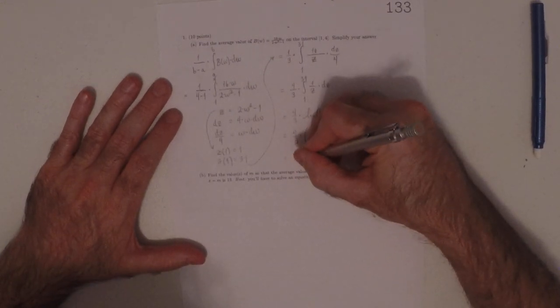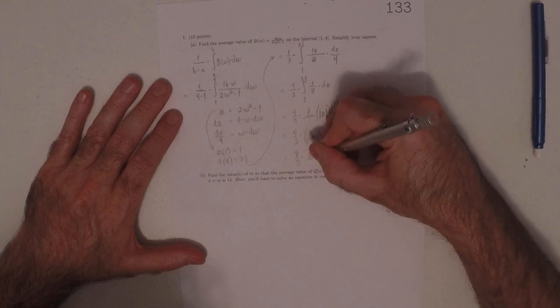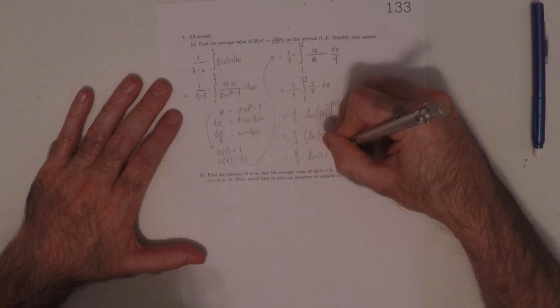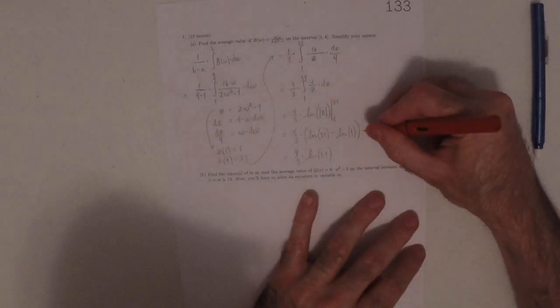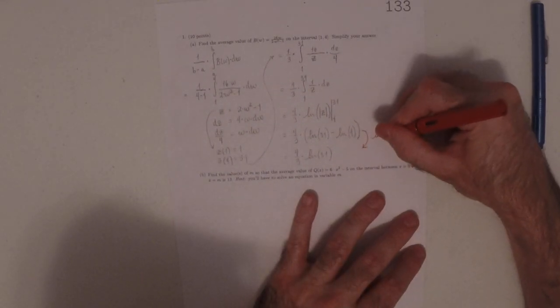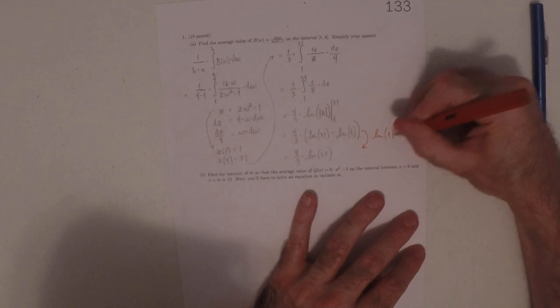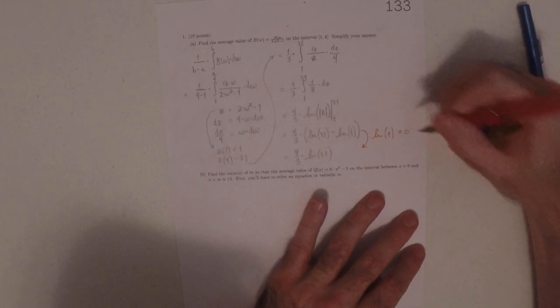But the logarithm of 1 is 0. So the answer is 4 thirds logarithm 31, because the logarithm of 1 is 0.